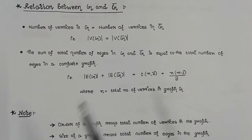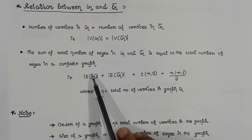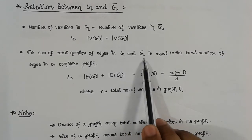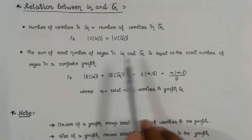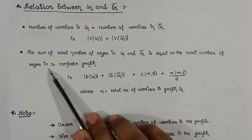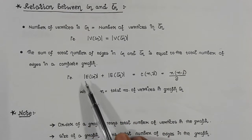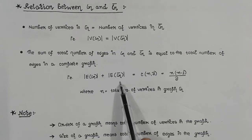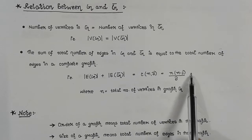In a complete graph, every vertex is connected to every other vertex by exactly one edge. So the relation is: number of edges in G plus number of edges in G-bar equals number of edges in the complete graph. The formula for the total number of edges in a complete graph with N vertices is N(N-1)/2.